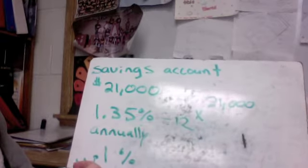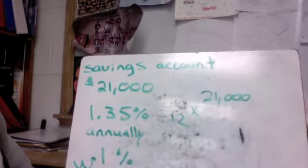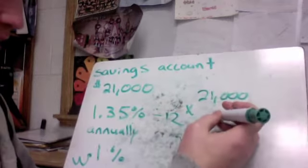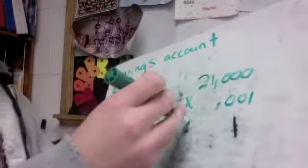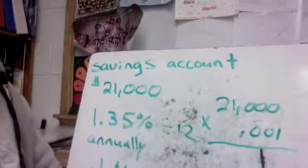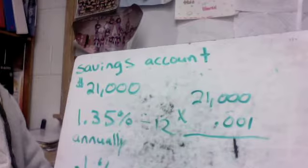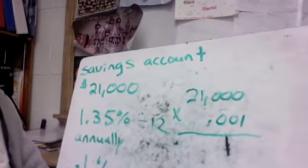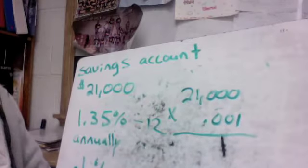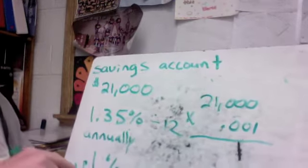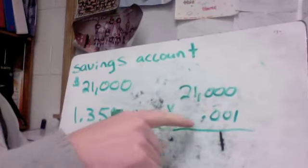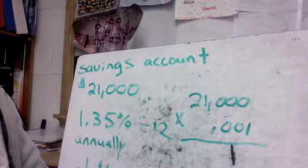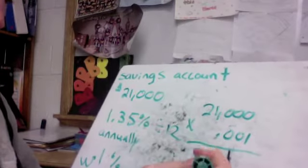So my number is now going to be 0.001, one-thousandth is what that would be. So I need to times that by one-thousandth to see how much money I would have. I'm going to do $21,000 times 0.001. And my total comes out to be 21.